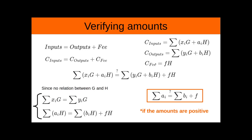The same for the outputs, and the commitment of the fee is just the fee times H, which is also a generator. Since there is no relation between G and H, these two generators, we can rewrite these equations in terms of G and H. The mask terms X and Y have to be equal, so the sum of them has to be equal. And if we sum the terms in H, we can see that the amounts of the inputs are equal to the amounts of the outputs plus the fee.